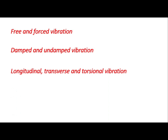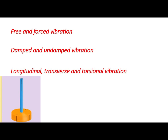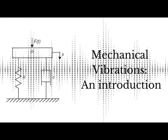Vibrations are also classified into longitudinal, transverse, and torsional vibration. Longitudinal vibrations are those in which the vibration involves a to-and-fro motion along the axis of the vibrating body. Transverse vibration involves to-and-fro motion perpendicular to the axis of the body. Torsional vibration involves a to-and-fro twisting or rotational motion of a vibrating system.